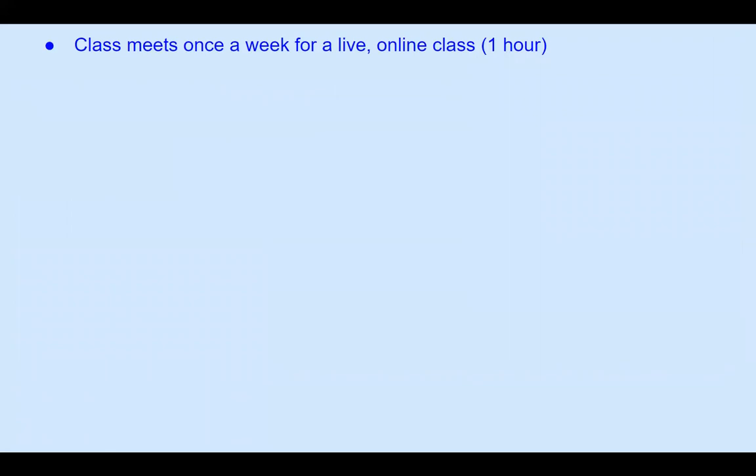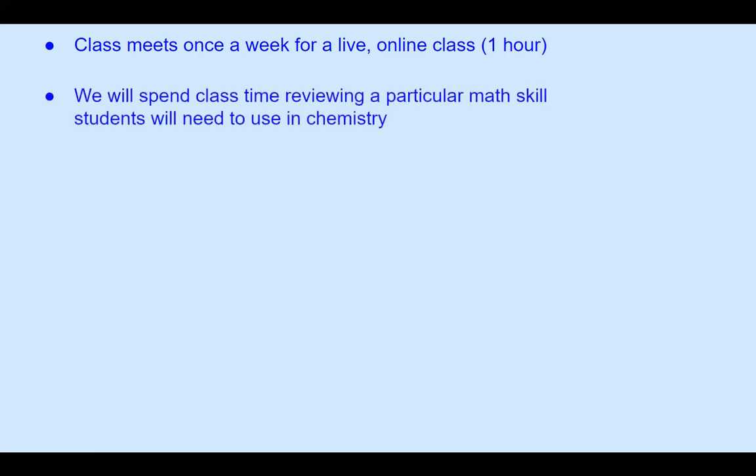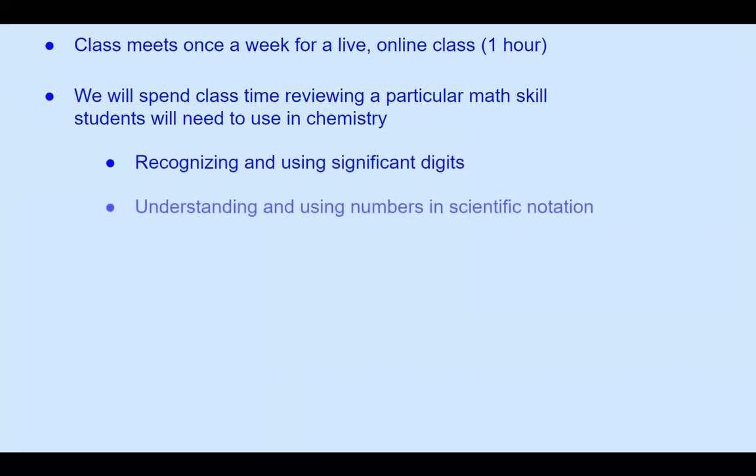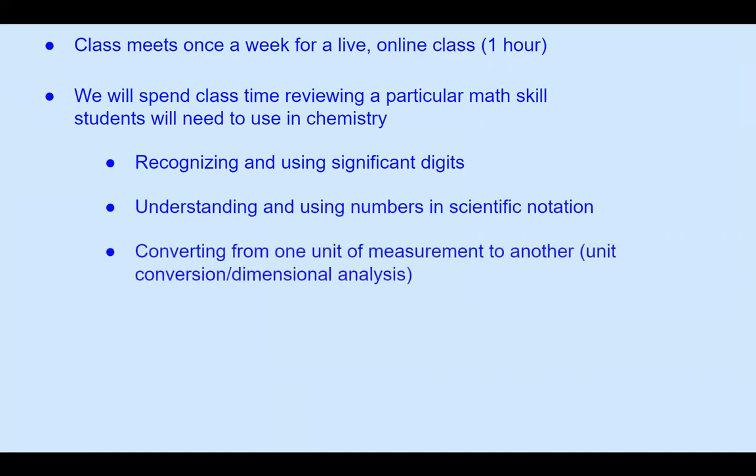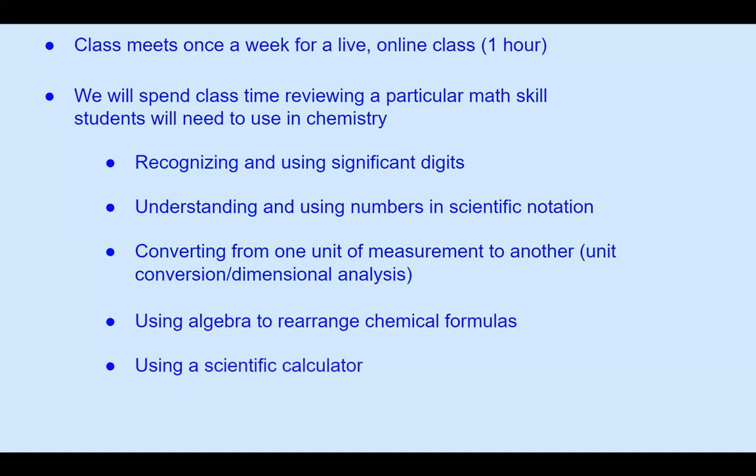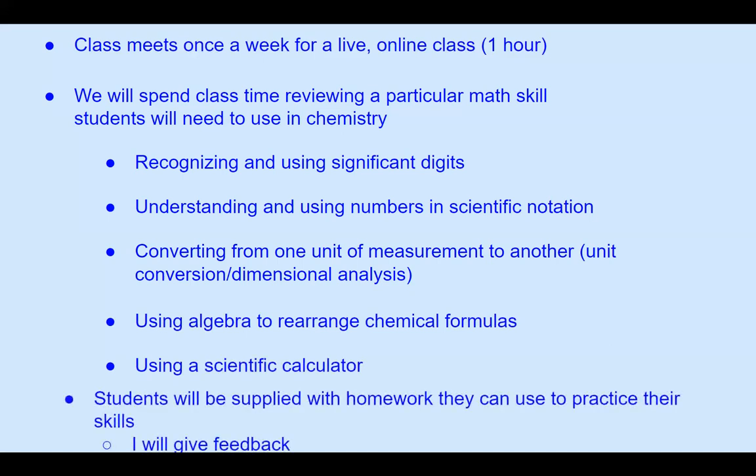So if any of these skills you feel that your student is shaky on, you might want to consider taking this math skills for chemistry class. The class is going to meet once a week for a live online class, and we will meet six times from mid-June to mid-July. We will spend our live class time reviewing one or two particular math skills that the students are going to use in chemistry. So we're going to learn about recognizing and using significant digits, understanding and using numbers in scientific notation, converting from one unit of measurement to another unit conversion, using algebra to rearrange chemical formulas, using a scientific calculator. I will give the students homework that they can do in between our live class times so that they can practice the skills that we are learning. I will look over all of their work and give them feedback. If they're struggling or confused, we can work on that in class.